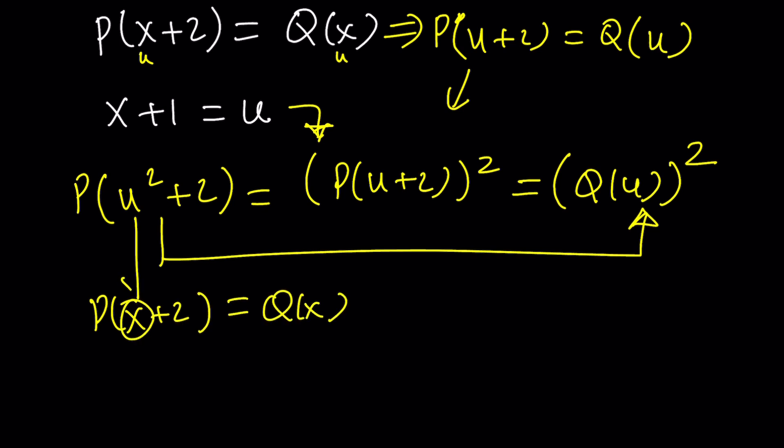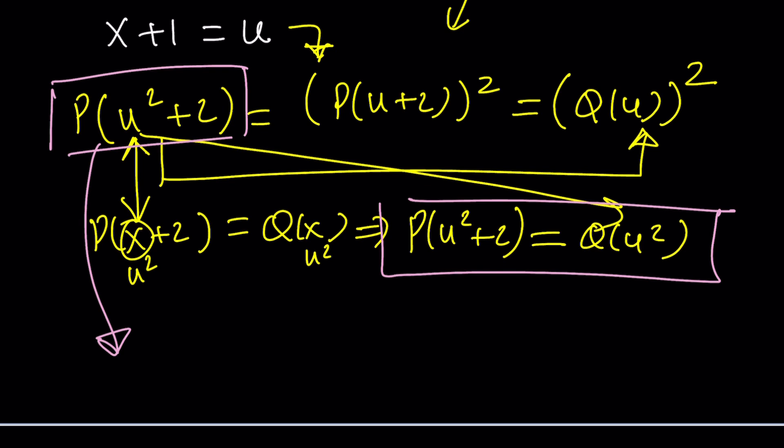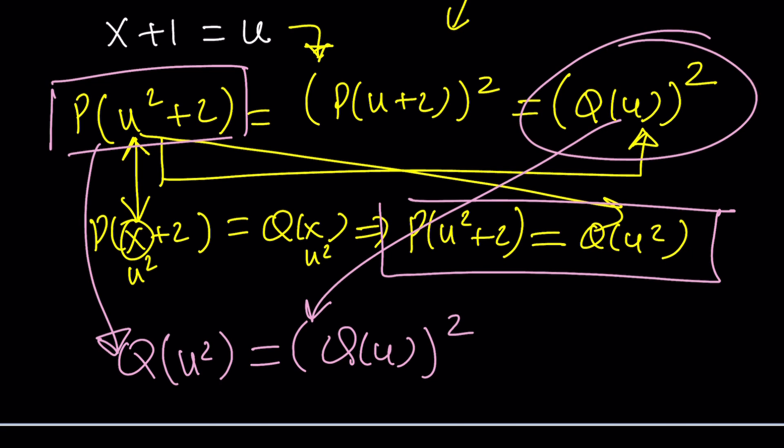When you replace x with u² on both sides, P(u² + 2) becomes Q(u²). That's kind of a lot of substitution. I hope this is not super confusing because I like confusing myself too sometimes. But now this is equal to this. So now we're going to replace P(u² + 2) with Q(u²). Notice that everything is a lot simpler now.